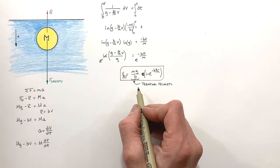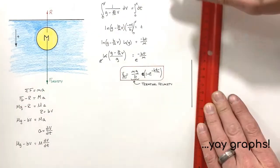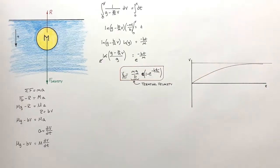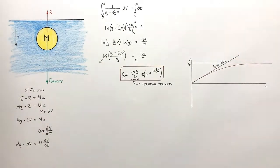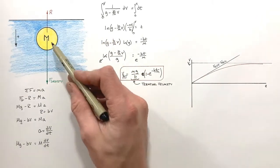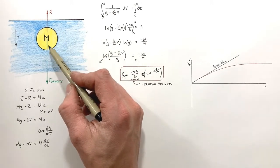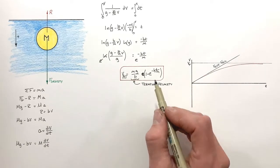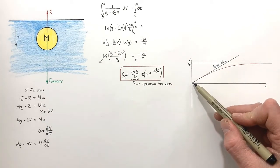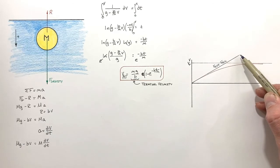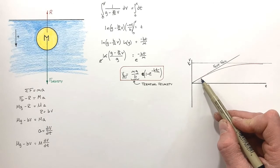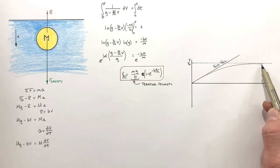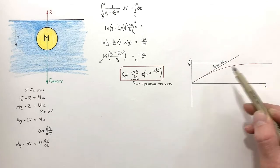To get a better handle on this equation, let's graph this function. What's happening is the ball is falling, and at first it's essentially in free fall with no resistive force. But as it speeds up, the resistive force grows and the acceleration decreases, eventually reaching zero. Comparing to free fall — where velocity increases steadily — in this problem the ball approaches a terminal velocity and eventually cruises along at near-constant velocity rather than steadily increasing.